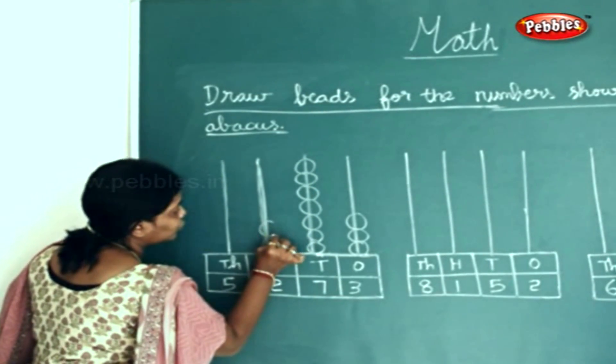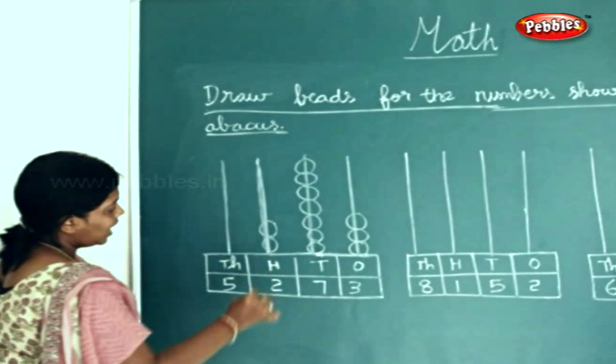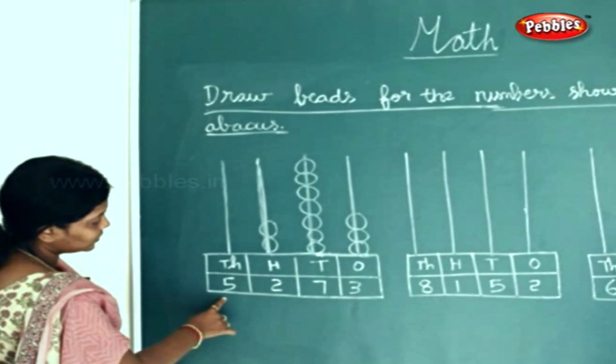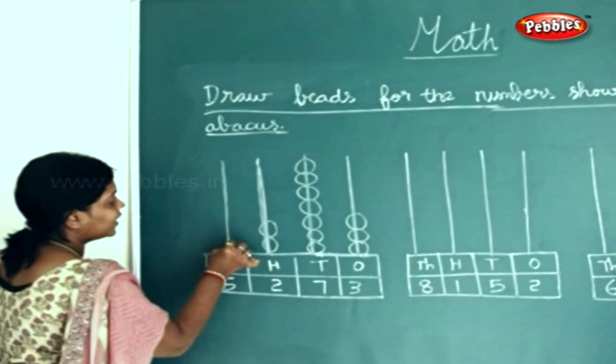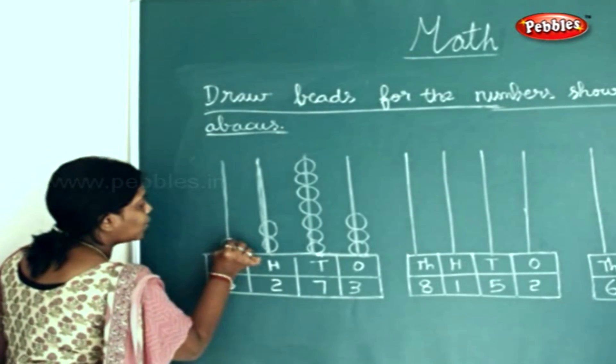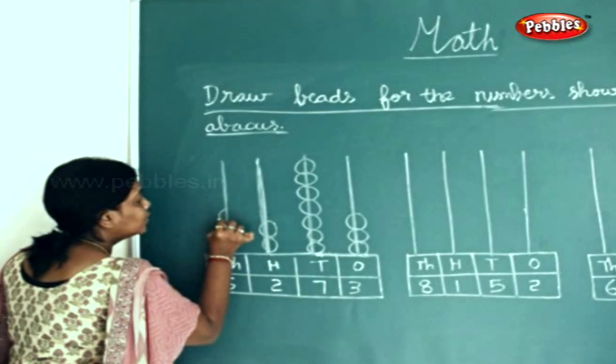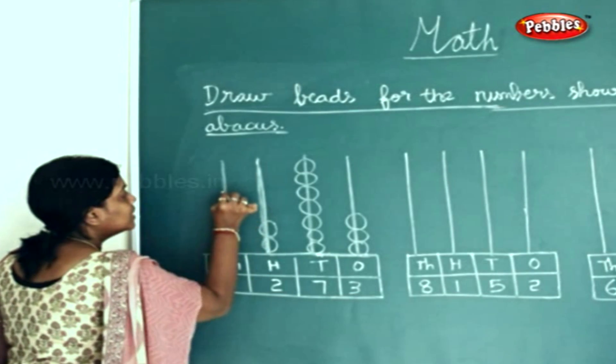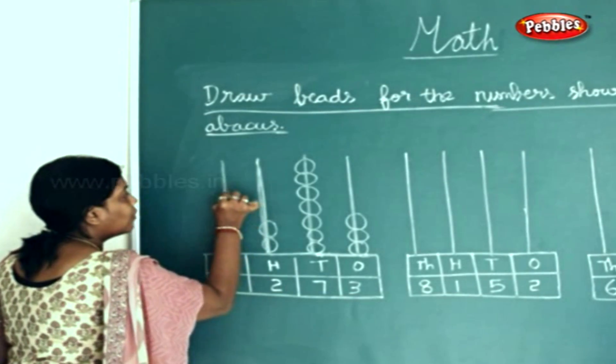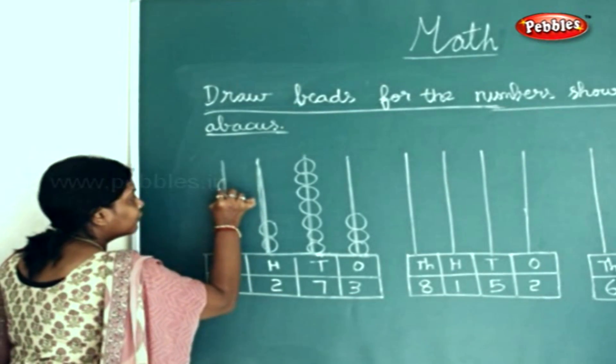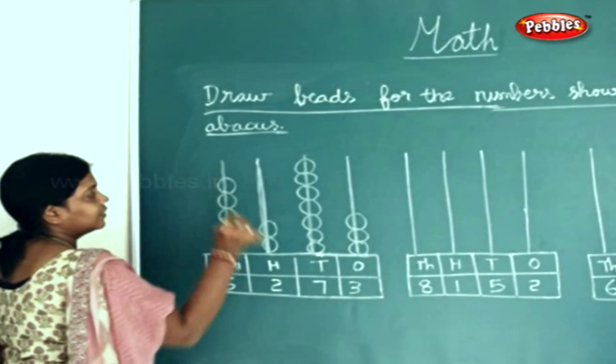So we draw 2 beads. How many in the 1000s? 5 beads. So we draw 1, 2, 3, 4, 5.